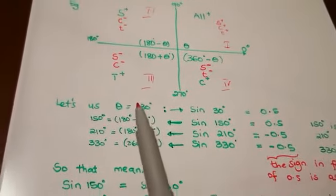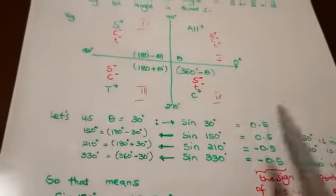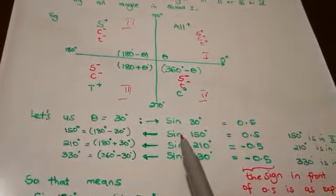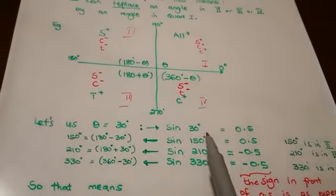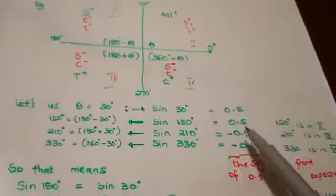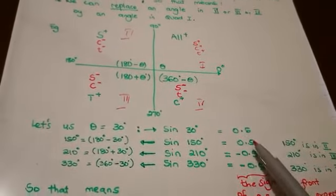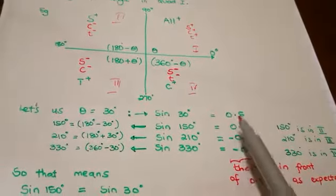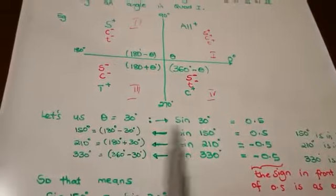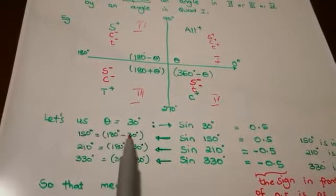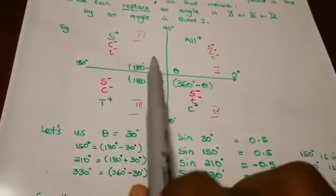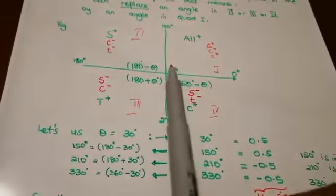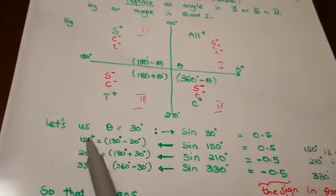If we use theta equals 30, punch this into your calculator: sin 30 equals 0.5. And then sin 150 is also 0.5. As expected, because sine is positive in both quadrants. Notice that 150 is actually 180 minus 30, which is a true representation of what is happening here. So 180 minus 30, which gives you 150 — the angle in the second quadrant.